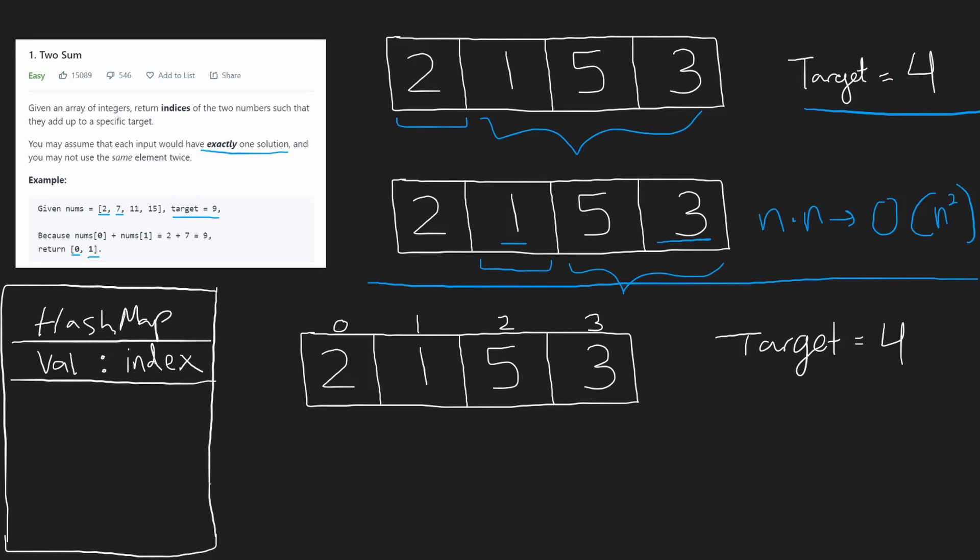Now we could add every value in this array into the hash map before we start iterating through it, but there's actually an easier way to do it. If we added the entire array into the hash map initially, then we would get to the value 2 first. We would want to check does the difference between target 4 minus this value 2, which is equal to 2, exists in our hash map.